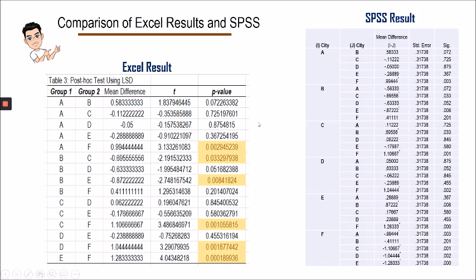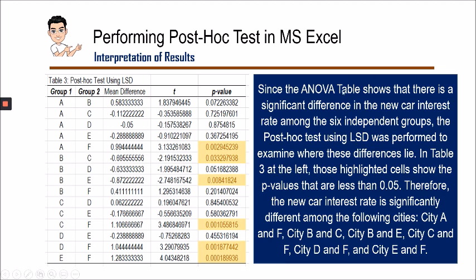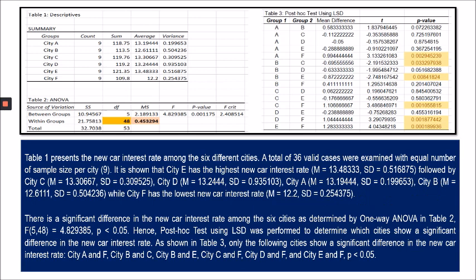Now, how do we discuss the interpretation of the information in this table? We can use this paragraph: Since the ANOVA table shows that there is a significant difference in the new car interest rate among the six independent groups (the cities), the post hoc test using LSD was performed to examine where these differences lie. The highlighted cells in Table 3 show p-values less than 0.05. Therefore, the new car interest rate is significantly different among: City A and F, City B and C, City B and E, City C and F, City D and F, and City E and F.